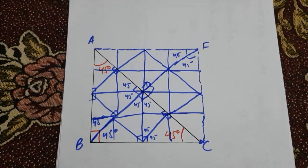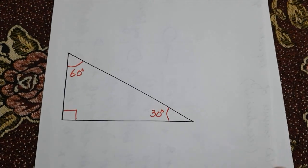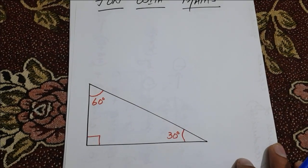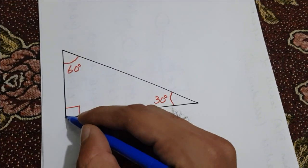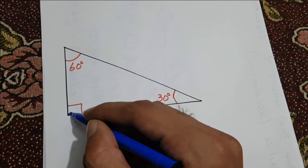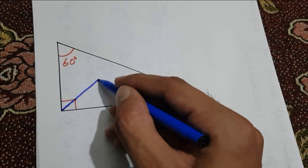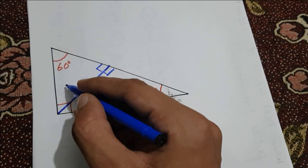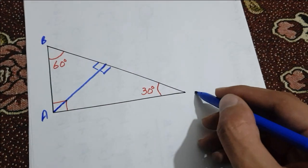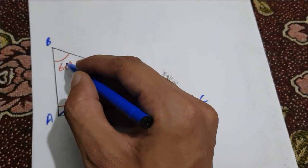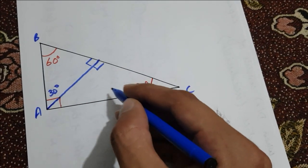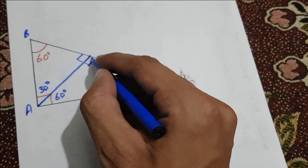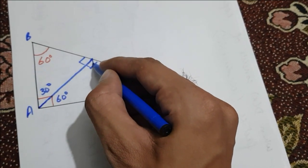Now consider another case of a right triangle where the acute angles are 60 degrees and 30 degrees. When we divide the angle of 90 degrees — drawing a perpendicular on the opposite side — we get two angles of 90 degrees each. The angle in the upper right triangle is the complement of 60 degrees, which becomes 30 degrees, and the angle below becomes 60 degrees.